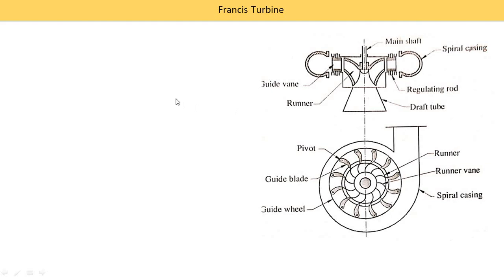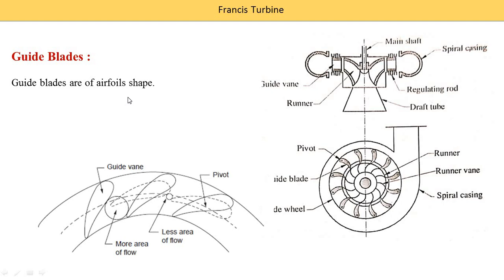Next, we understand the component: guide vanes. From the name, guide means it guides the flow of the water. The guide blade helps water enter in a proper direction to the runner — it has an aerofoil shape. In the image, these are the different guide vanes. They are fixed between two rings — one outer ring and one inner ring — in the form of a fill.